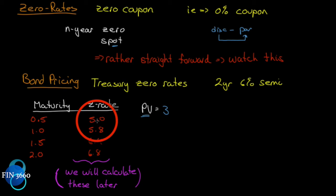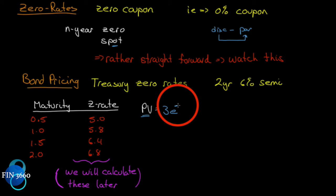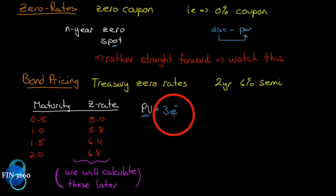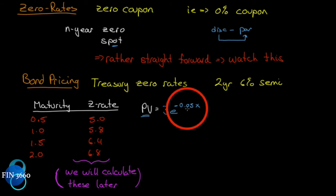Be careful here: we are continuously discounting. Since we're discounting, remember it's the negative sign. So it's 3·e^(−0.05 × 0.5), because the term is 0.5 — it's not a full year.